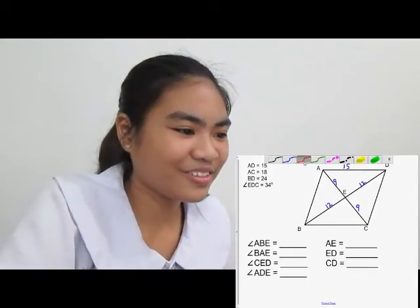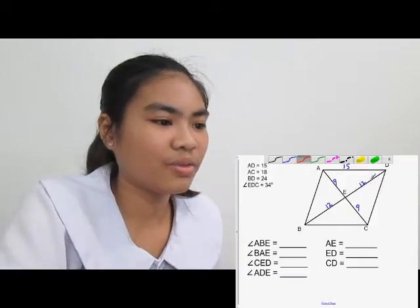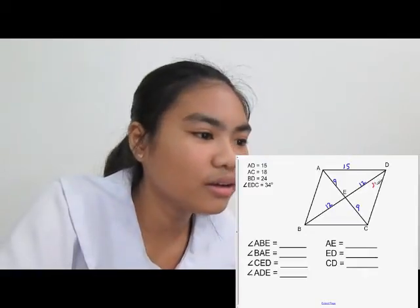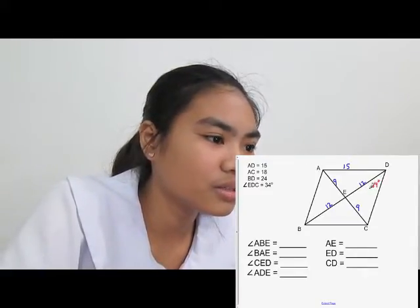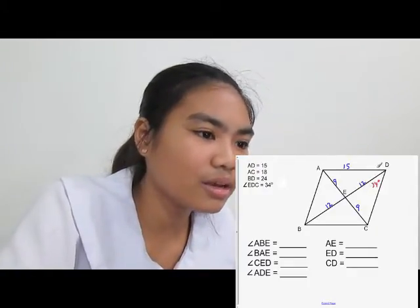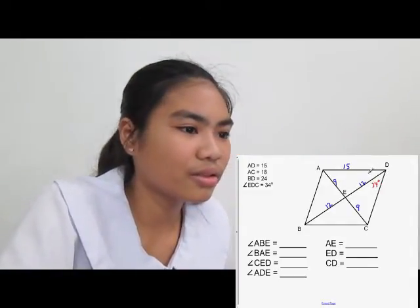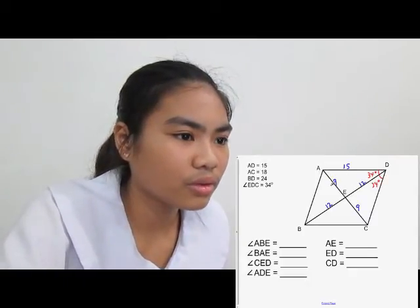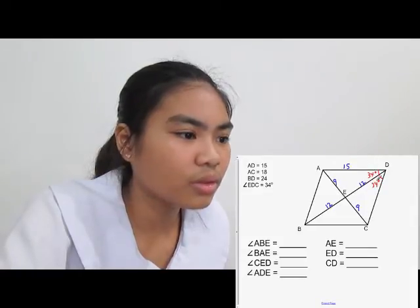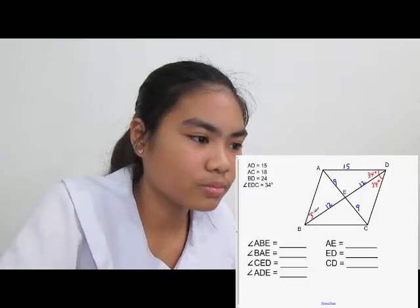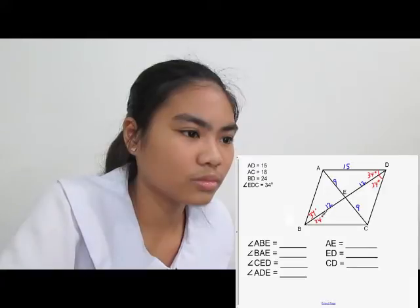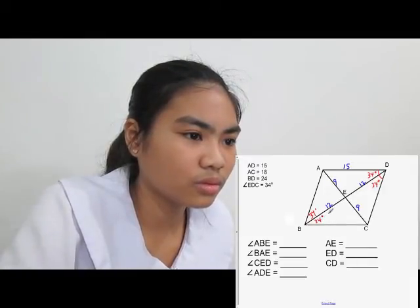Let's label the angles. Angle EDC is 34 degrees. Because the diagonal is a line of symmetry, the angle on the other side is also 34. And since AC is also a line of symmetry, these 34-degree angles are reflected here as well, giving us four 34-degree angles around the center.